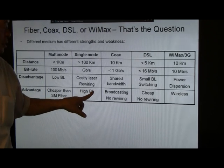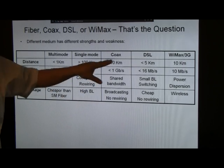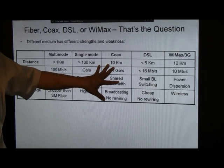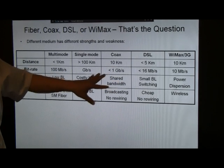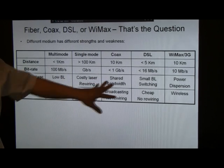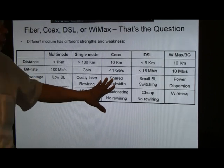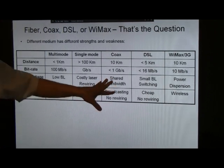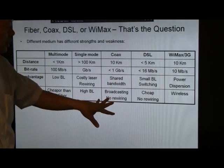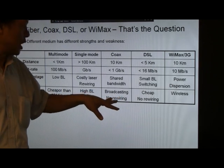Coaxial cable actually is somewhere in between multi-mode and single-mode for which you can go a longer distance of 10 kilometers, but the data rate is less than one gigabits per second. It's largely a shared bandwidth, which is a disadvantage if your neighbor happens to be upstream from you and using more bandwidth, you may be starved of bandwidth. The advantage is it's a broadcasting medium, and it's a lot easier to wire with coaxial cable.